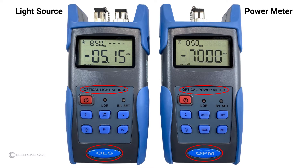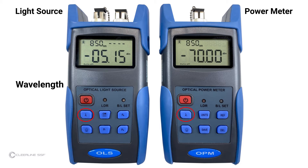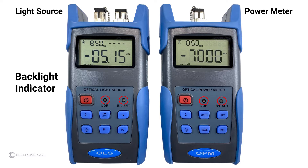The light source and power meter can be identified by labels on the front of each unit. The keys and indicators included on both units are: Power button, which also controls the auto shutdown function; Wavelength key, which activates the laser and controls wavelength in nanometers; Backlight control key, which controls the backlight mode; and backlight indicator and backlight sensor.